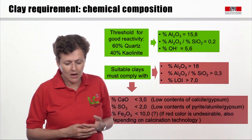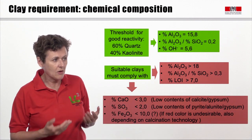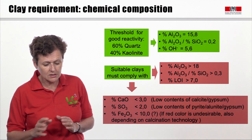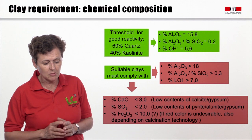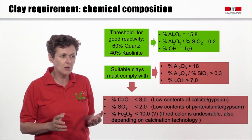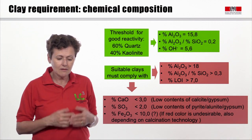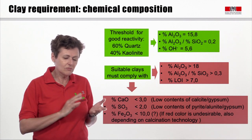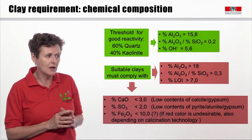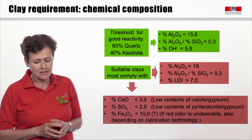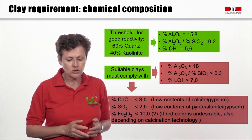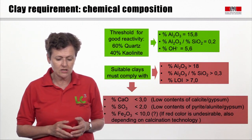We also need to be careful about some other things. If the calcium content is above about 3%, there may be a problem with calcite or gypsum content, so it's best to be below 3%. Sulfur is best kept below about 2% to avoid too much pyrite, alunite, or gypsum. Iron is not too much of a problem if you don't mind about colour, but if you want a pale colour it should be kept below about 10%. However, as we'll discuss in a later lecture, you can correct the colour by controlling the oxidation-reduction conditions in the kiln.